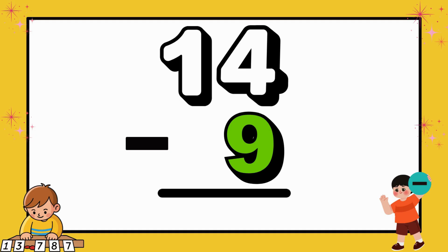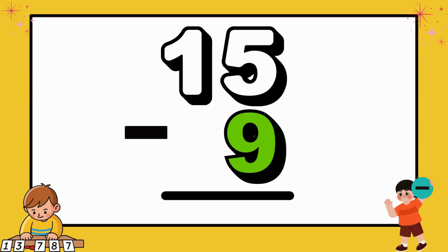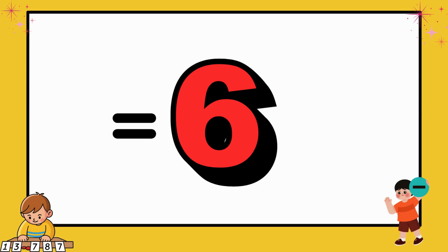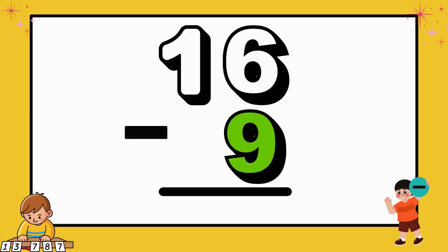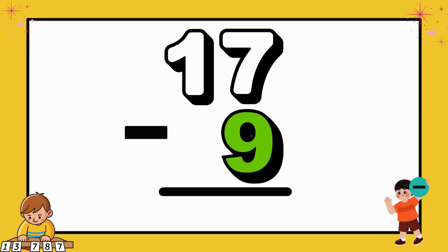Moving on, 14 minus 9 equals 5. Continuing, 15 minus 9 equals 6. From there, 16 minus 9 equals 7. Following that, 17 minus 9 equals 8.